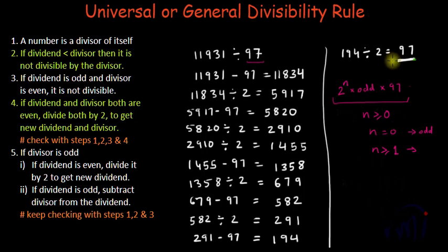If the dividend is completely divisible, it reduces to the divisor itself; otherwise, it becomes less than the divisor. The logic behind this universal divisibility rule should now be clear. For more interesting videos, keep watching MathSmart. Bye!